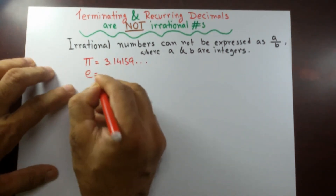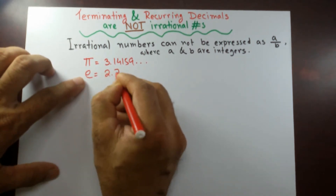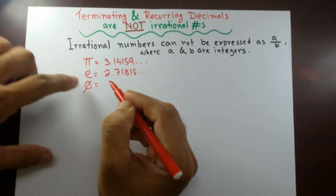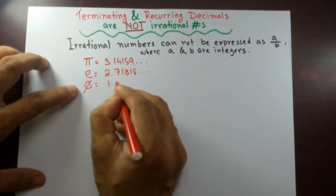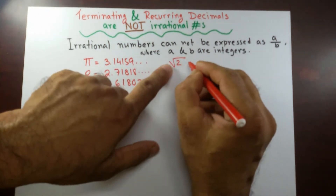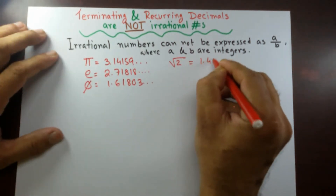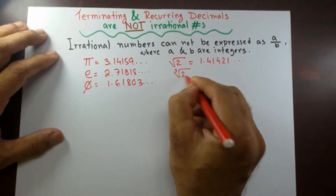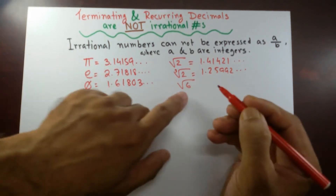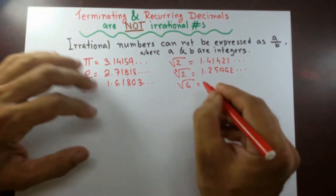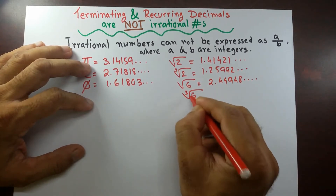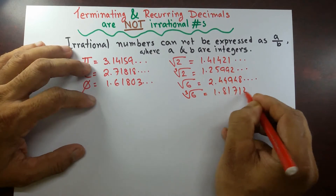Then we had e, the base of the natural logarithm, which is 2.71828 and keeps going on. Then we have phi, called the golden ratio or golden number, and that's 1.6180. Then prime numbers involving square roots — that's 1.41421. If it's a cube root, then it's 1.25992. And a composite number involving a root that you cannot take out of the root, that's 2.44948 and keeps going on; in cube root form it's 1.81712 and keeps going on.